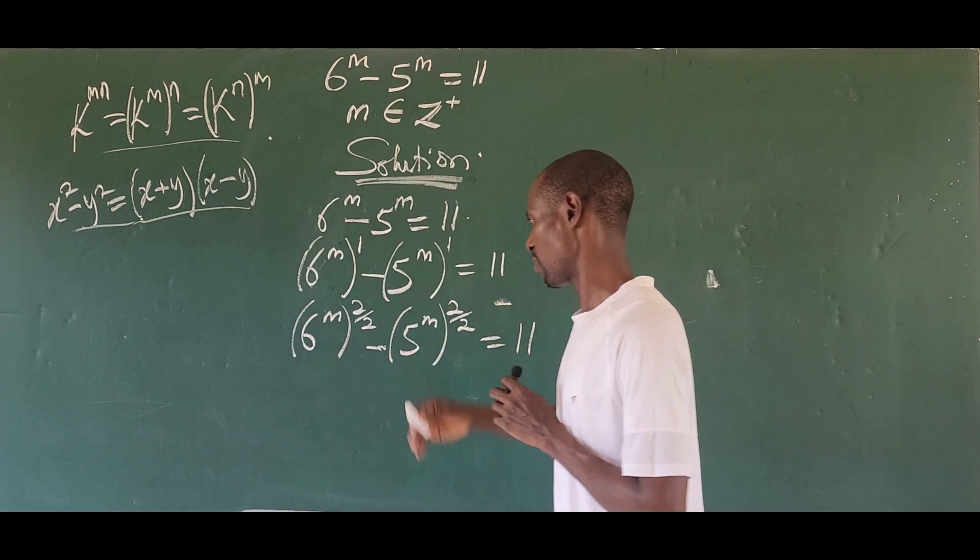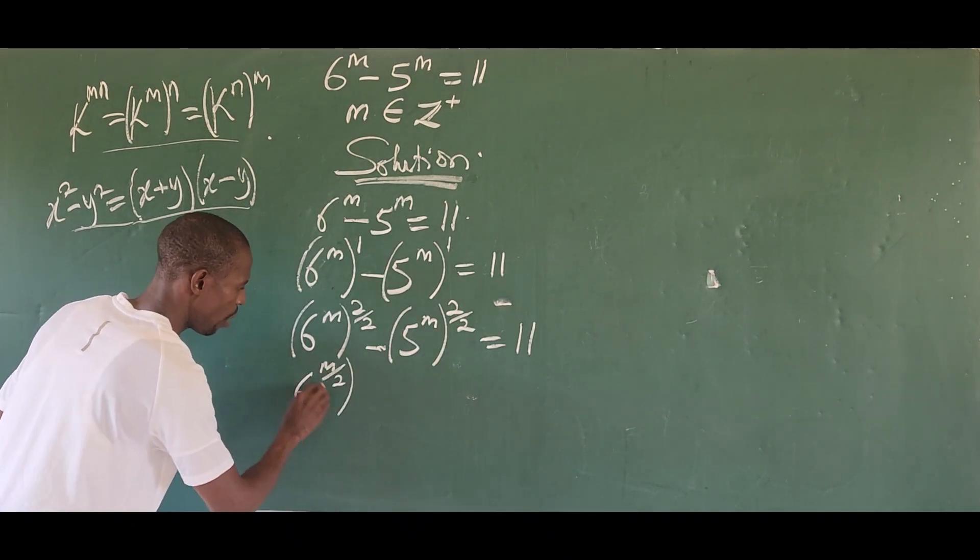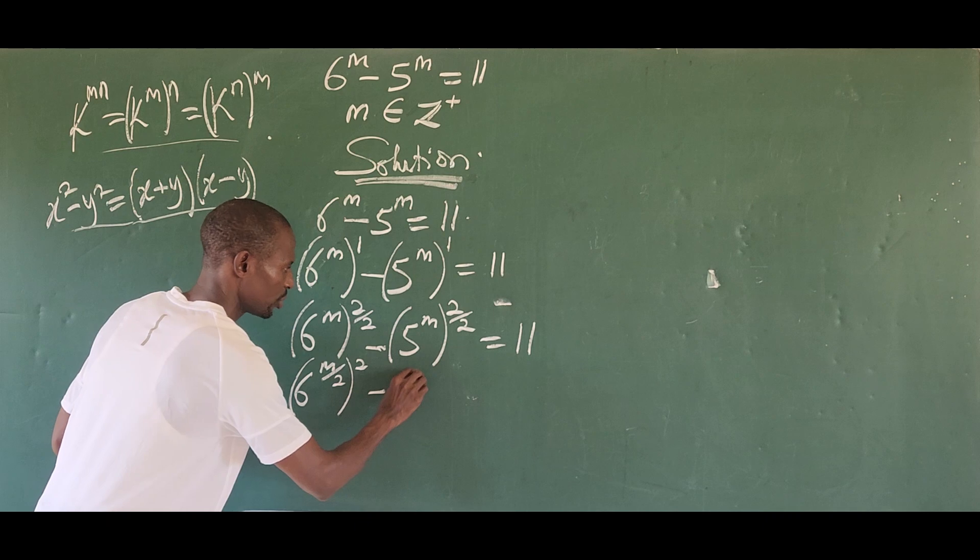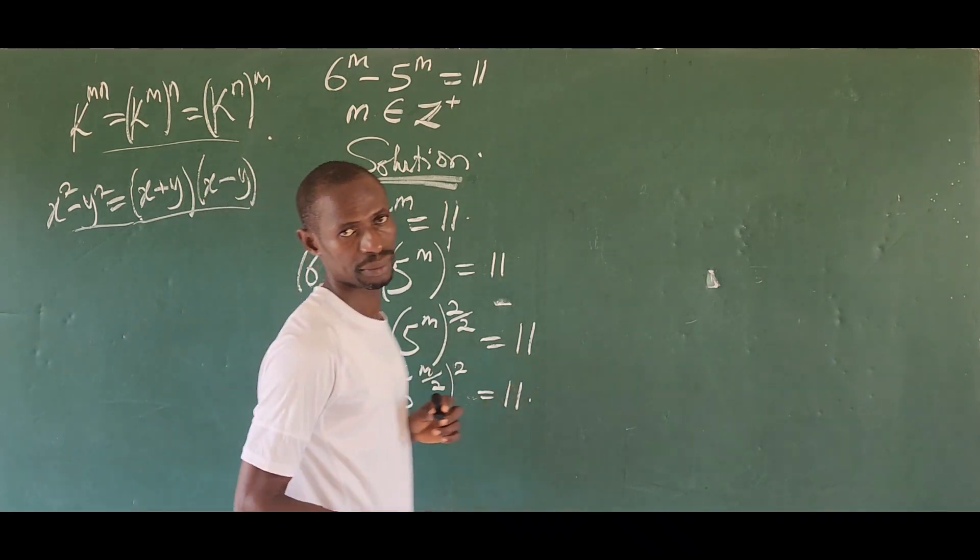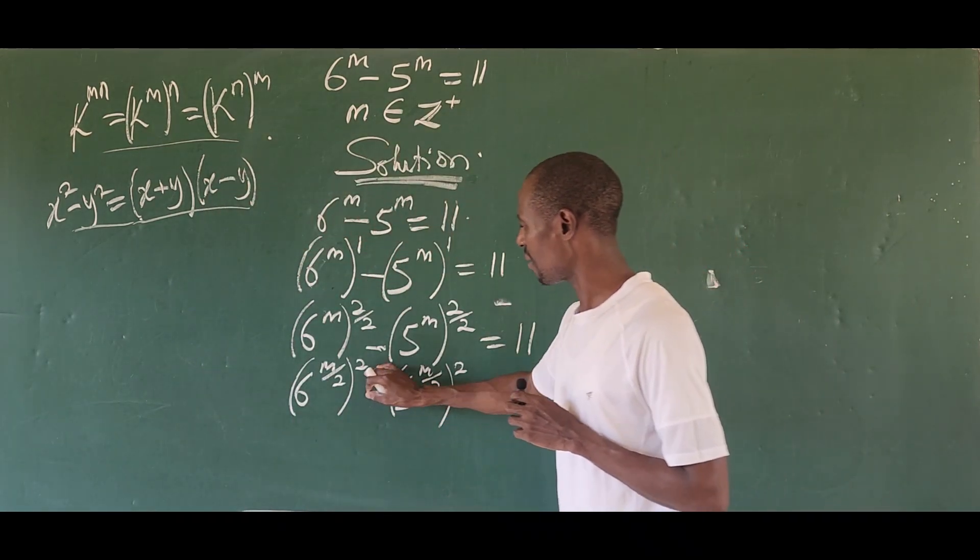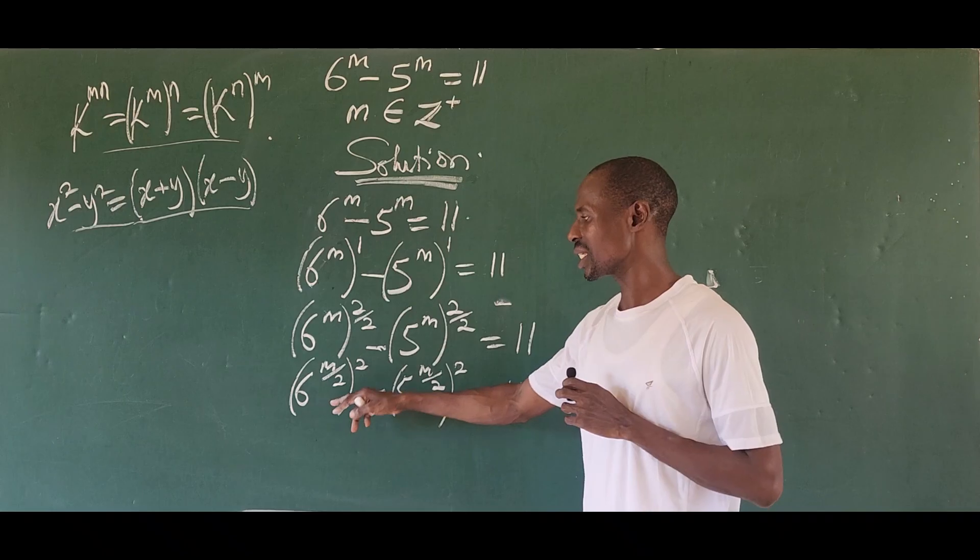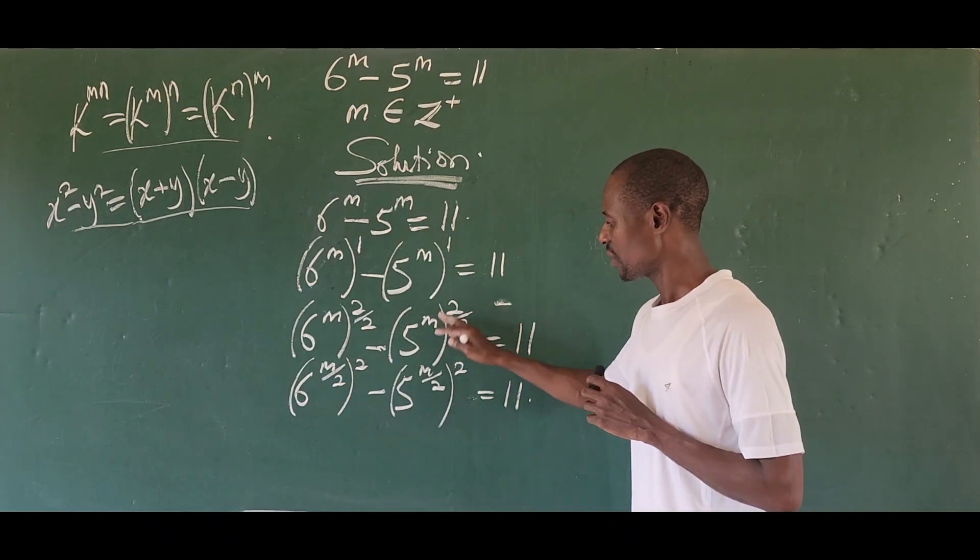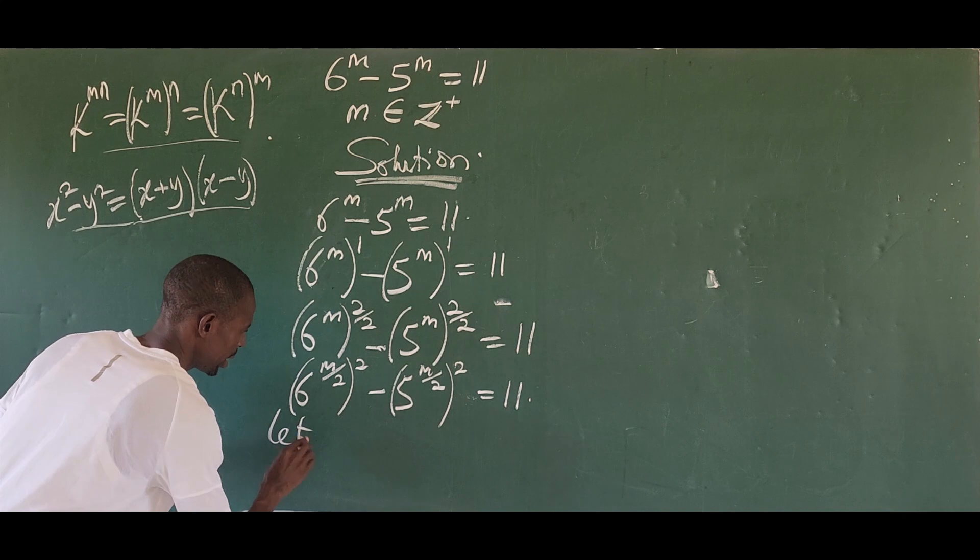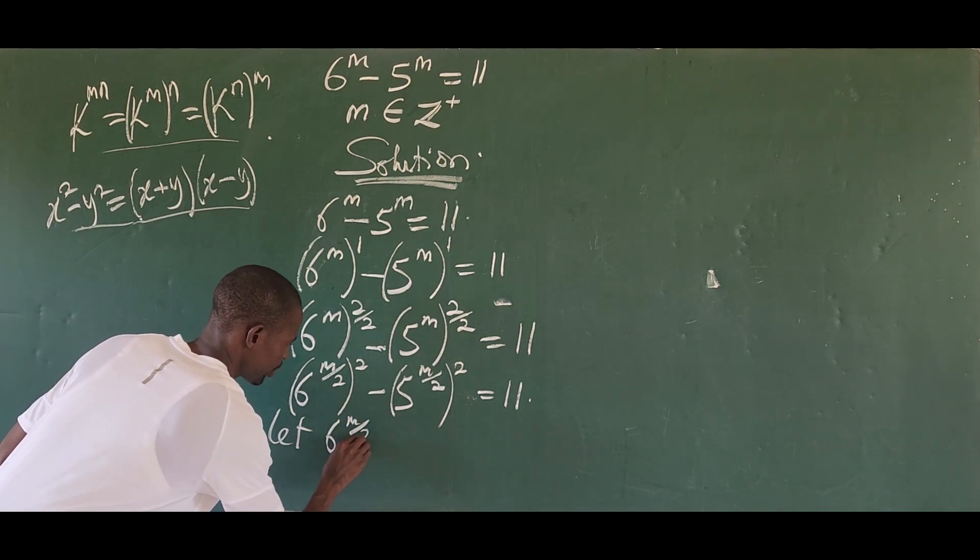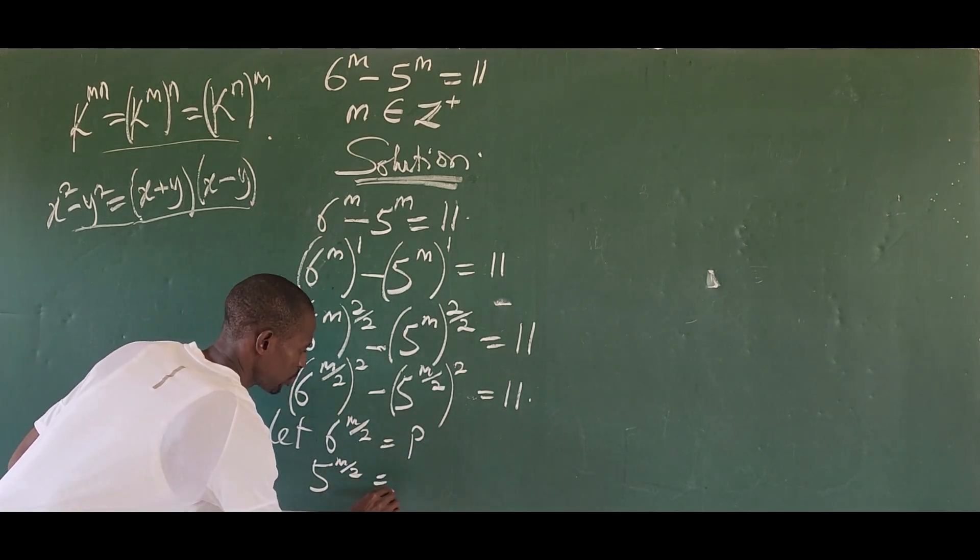So that is what we are working towards to bring that. And so I'm going to multiply this to give me six to the power of m all over two, all raised to the power of two, minus my five to the power of m all over two, all raised to the power of two, equal to 11. So with this, we now have our difference of two squared here, which is what we have here now. But before that, to avoid the writing of six raised to the power of m all over two, and five raised to the power of m all over two, I want to do a simple substitution here. So I will say here, let six to the power of m all over two be equal to, let me say, p, and my five to the power of m all over two to be q.